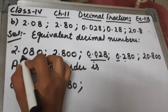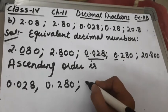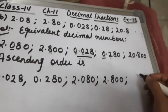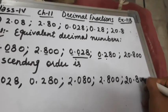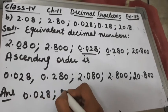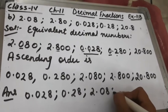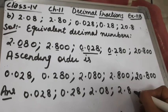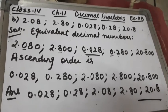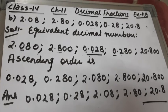For 2.080 and 2.800, the tenths place of 2.080 is 0 and of 2.800 is 8, so 2.080 comes first, then 2.800, and finally 20.800. So the answer is: 0.028, 0.28, 2.08, 2.80, and 20.8. This is how we arrange numbers in ascending order. This is question number 10 of exercise 11b.